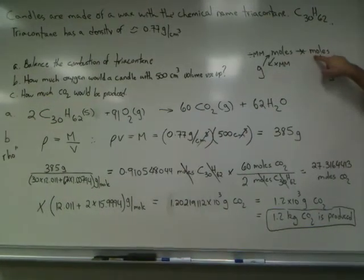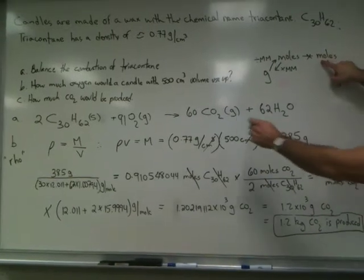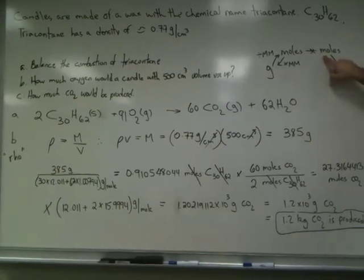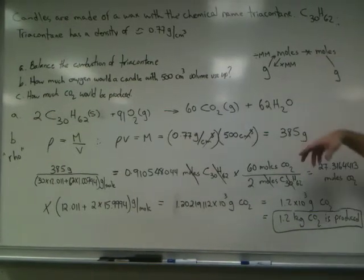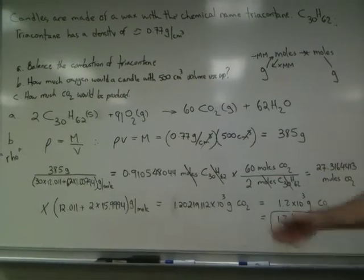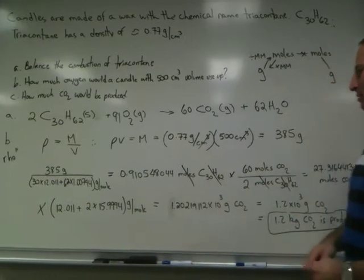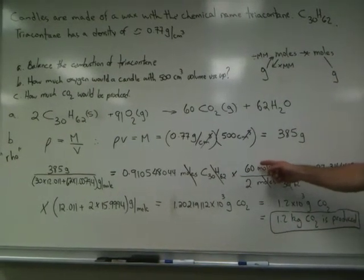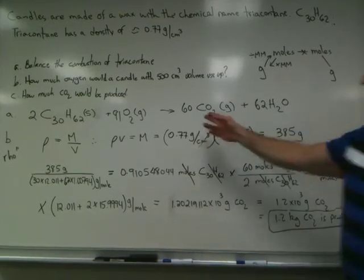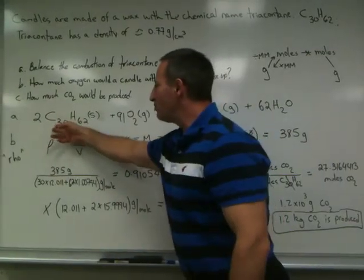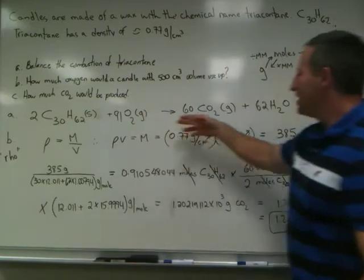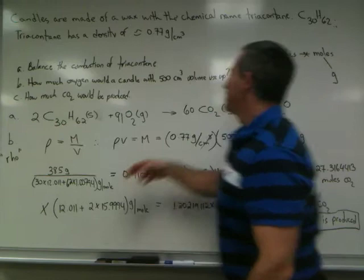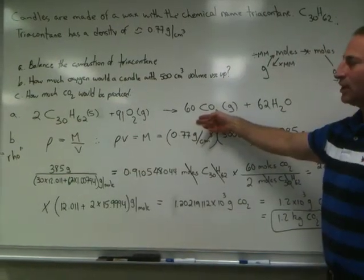The next step is to find out how many moles of CO2 are going to be produced. And we have to go through the stoichiometry of the reaction. So that involves putting a conversion factor to tell us how many moles of CO2 are going to be produced for X moles of triacontane being consumed. That stoichiometry is obtained from the balanced equation. It's 60 to 2. For every two molecules of triacontane burned, 60 molecules of CO2 appear. For every two moles of triacontane burned, 60 moles of CO2 appear.